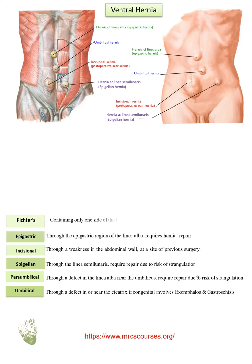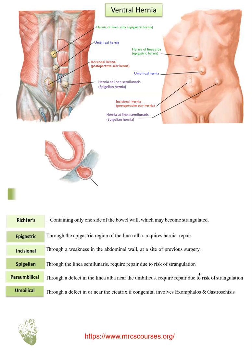Richter's hernia contains only one side of the bowel wall, which may become strangulated but with a low risk of obstruction. Littre's hernia is the same type as Richter's but contains Meckel's diverticulum, which is just one side of the bowel wall.